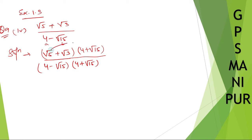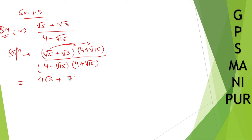Now take root 5 and root 3 and multiply both by 4 plus root 15. So root 5 into 4 gives 4 root 5, root 5 into root 15 gives root 75, which is plus root 75. Then plus 4 into root 3 gives 4 root 3, and root 3 into root 15 gives root 45.